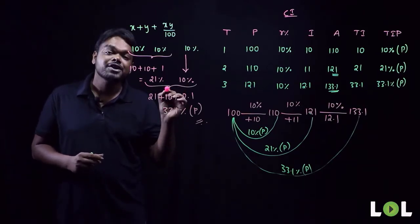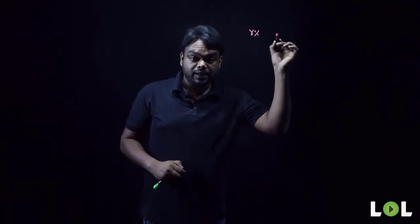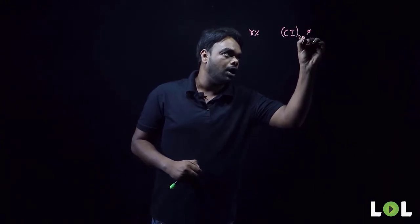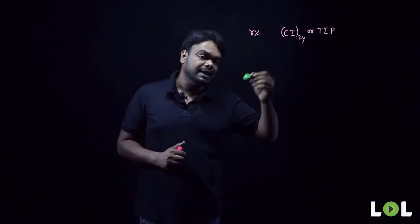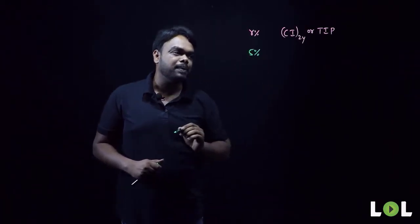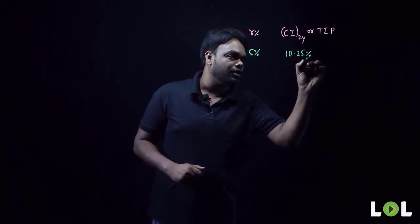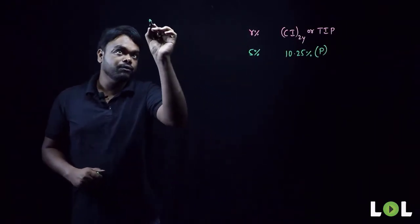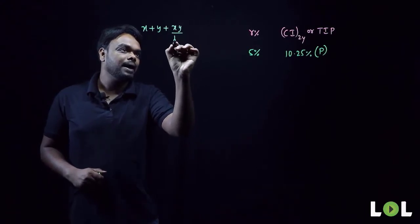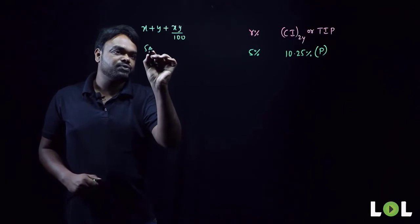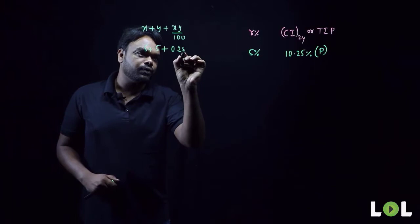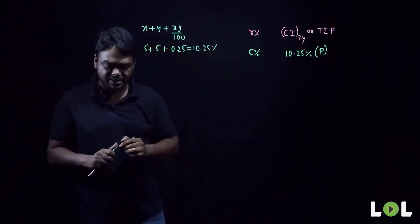Now let us work on calculating compound interest for two years using the TIP formula. Given a rate of 5 percent per annum, applying x + y + xy/100: 5 + 5 + (5×5)/100 = 10 + 0.25 = 10.25 percent of principal. So for a 5 percent rate, the TIP is 10.25 percent and the amount is 110.25 percent of principal.